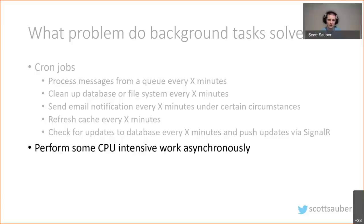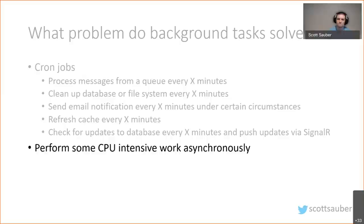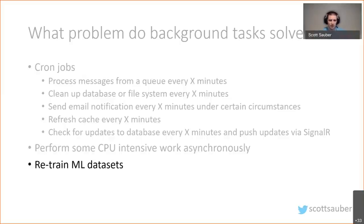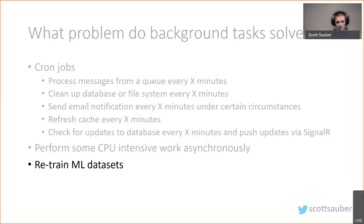You may also want to perform CPU-intensive work outside the normal request-response pipeline in ASP.NET Core. For instance, if you need to generate a million PDFs, you probably don't want to do that when somebody clicks a button — just send them a message saying we got your request and will notify you when done. Another example is retraining machine learning models on a background task.